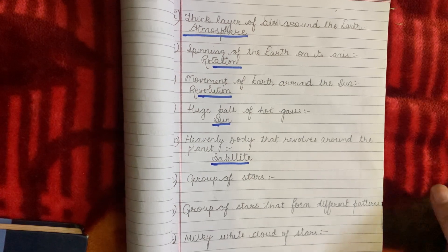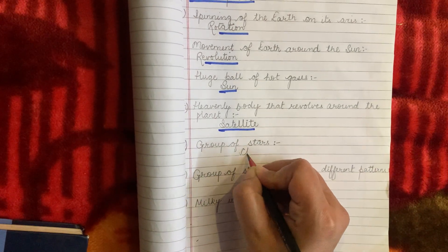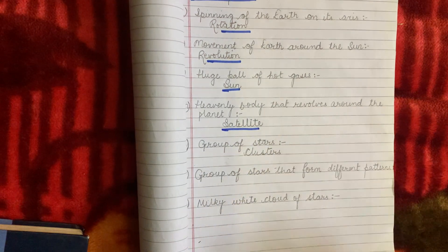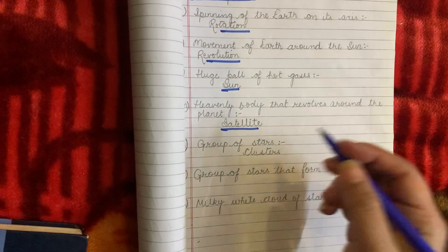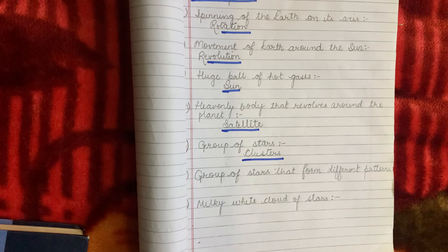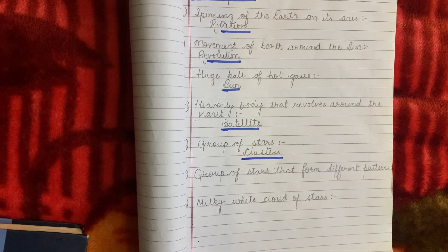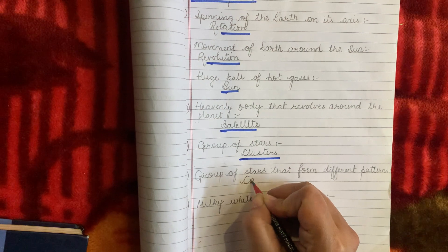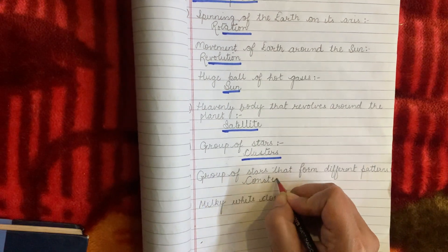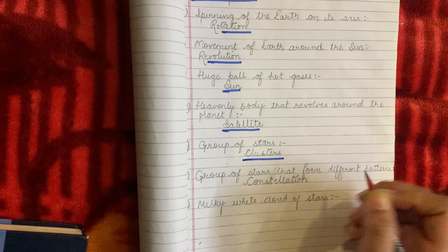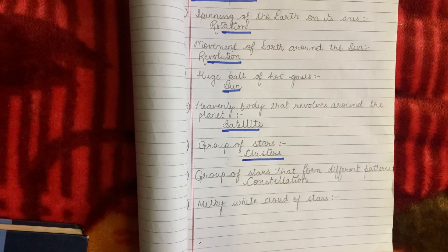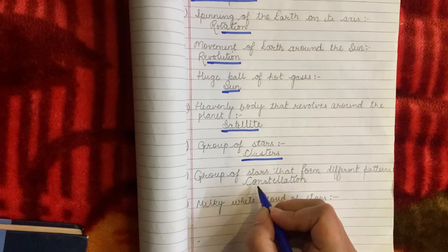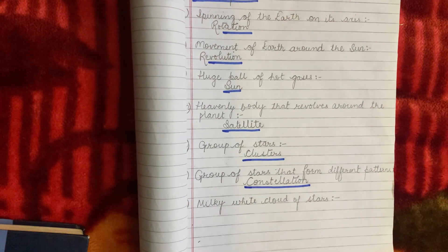Group of stars is known as clusters. And when a group of stars makes some pattern in the sky — like the polar bear, like the Saptarishi, like the Leo — those are known as constellations. Group of stars that form a pattern is known as constellation.